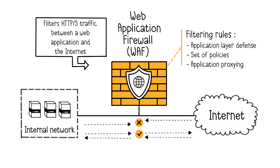This firewall can also act as a proxy, known as application proxying. It acts as a relay, invoking the requested service on behalf of the user while masking certain end users' information and addresses. However, Web Application Firewalls have a limited scope — they focus solely on protecting web applications at the application layer of the OSI model, leaving network and non-web vulnerabilities vulnerable to attacks.